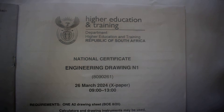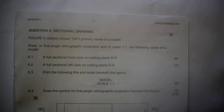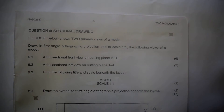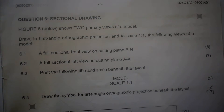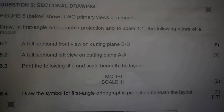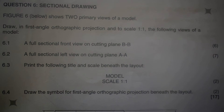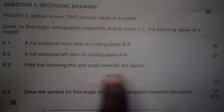Let's look at Engineering Drawing X paper written on the 26th March 2024, question six on sectional drawing. Figure six shows two primary views of a module drawn in first angle orthographic projection to a scale of 1:1. You are expected to draw a full sectional front view on cutting plane BP for 6.1, the full sectional left view on cutting plane AA for 6.2, and also print the required details and scale beneath the layout.